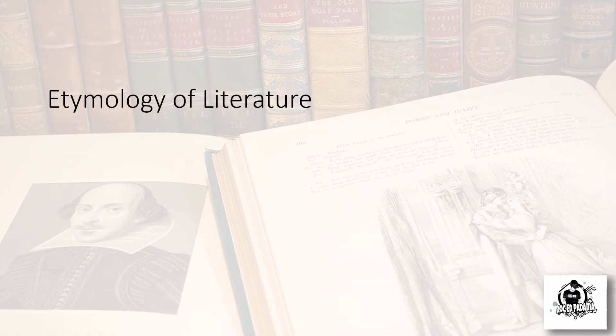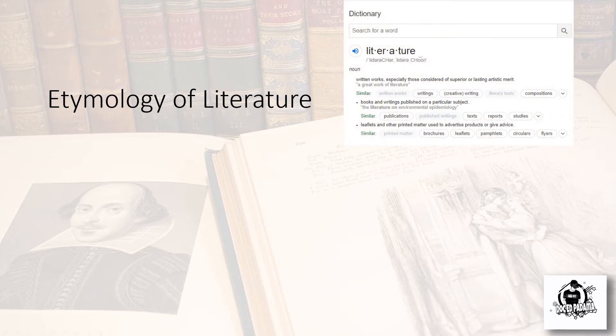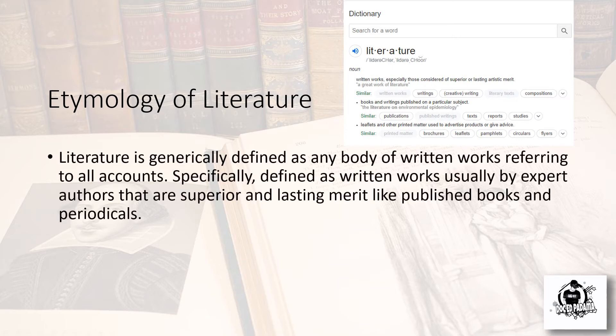Regarding the etymology of literature: literature is defined as written works, especially those considered of superior or lasting artistic merit. Examples include books and writings published on a particular subject, as well as leaflets and printed material used to advertise products or give advice. More generally, literature refers to any body of written works — specifically, written works by expert authors of superior and lasting merit, like published books and periodicals.